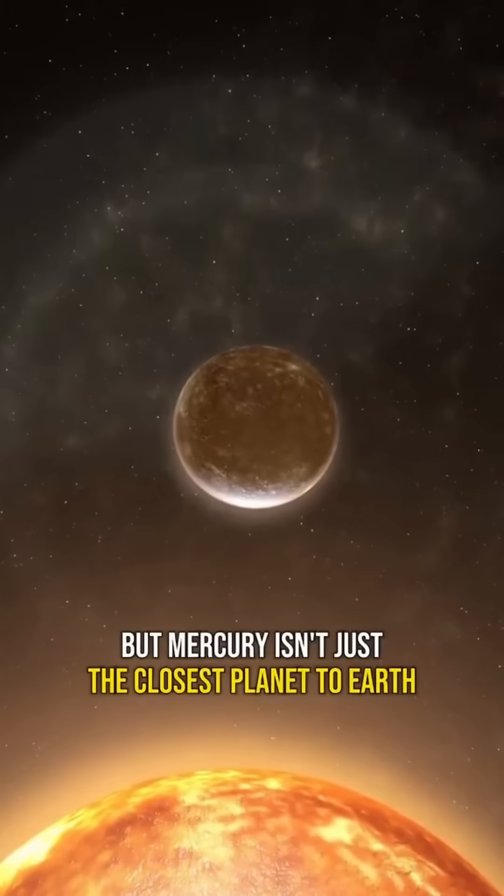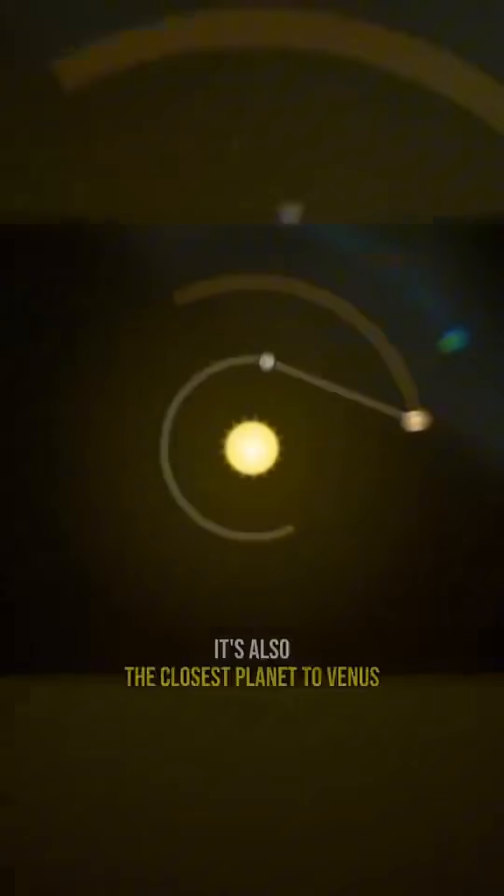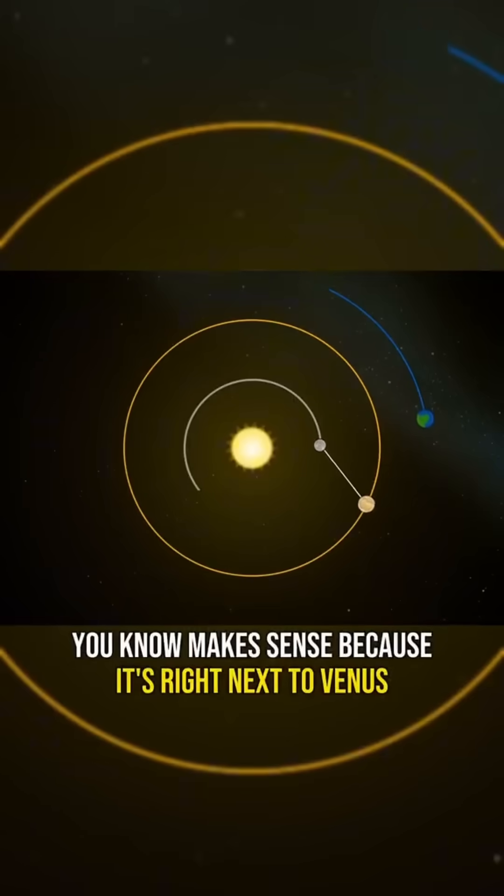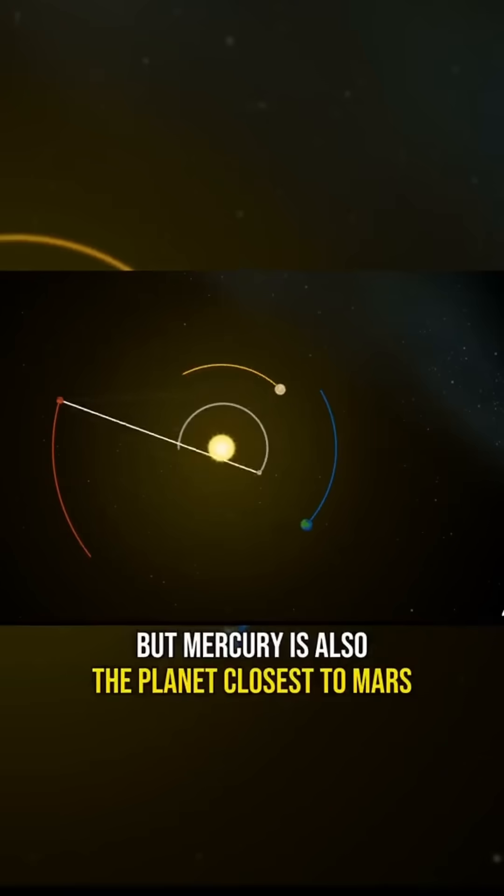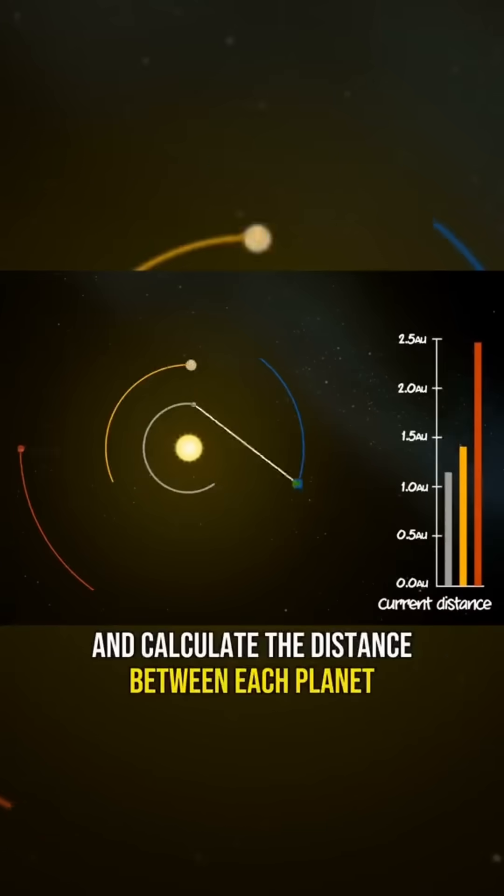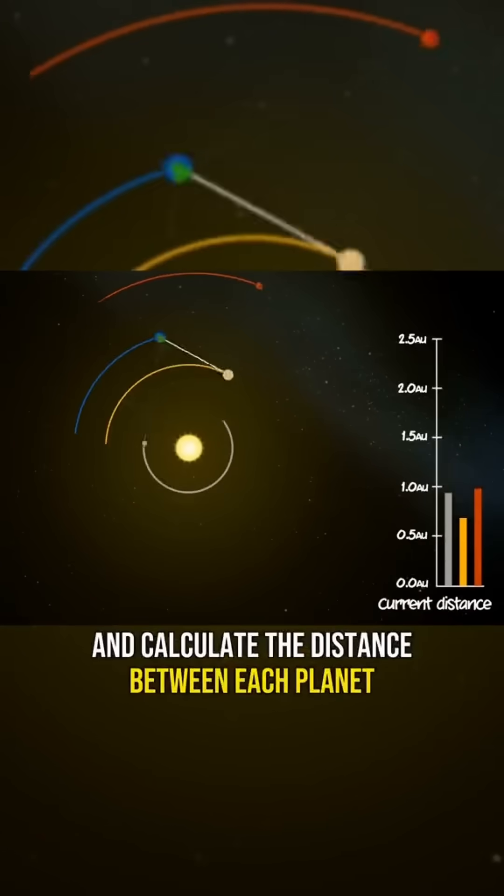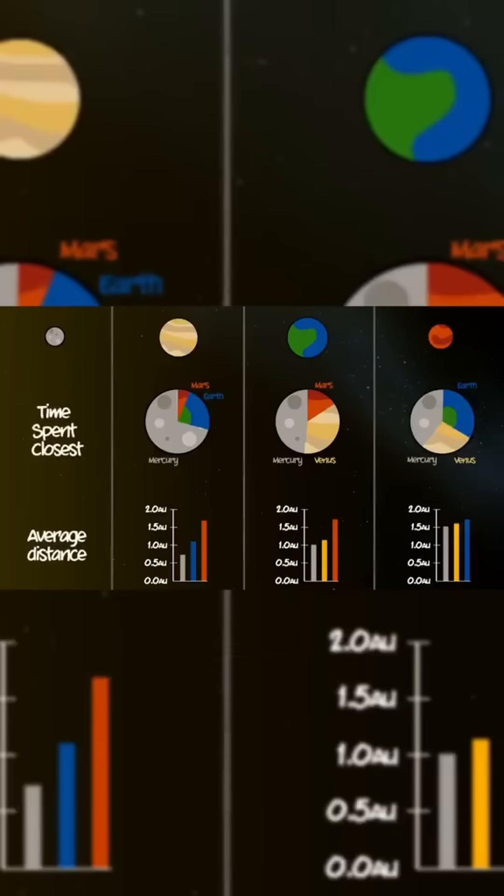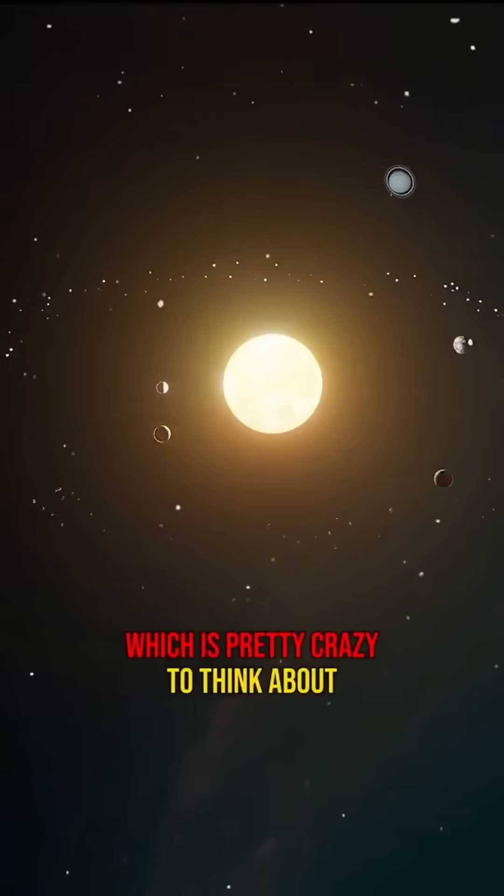But Mercury isn't just the closest planet to Earth, it's also the closest planet to Venus, which of course makes sense because it's right next to Venus. But Mercury is also the planet closest to Mars as well. So when you track the orbits and calculate the distance between each planet throughout the year, Mercury is the closest planet to Earth, Venus, and Mars, which is pretty crazy to think about.